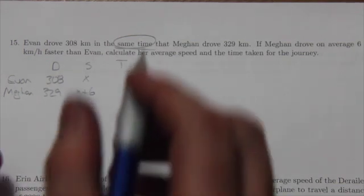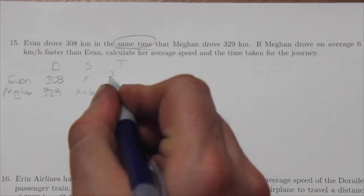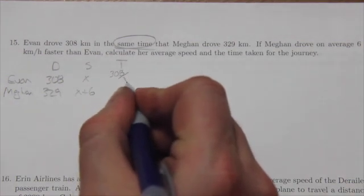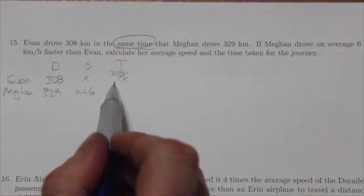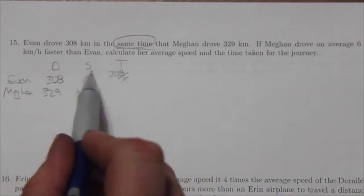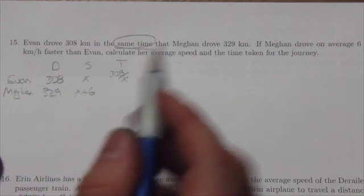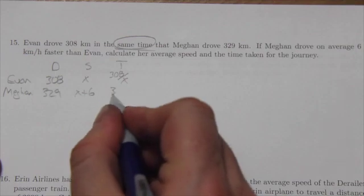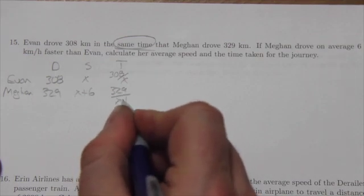Now immediately I know that the time taken was 308 divided by X. Why? Well because that's what time is. Time is distance divided by speed. Okay, so for Megan that will be 329 over X plus six.